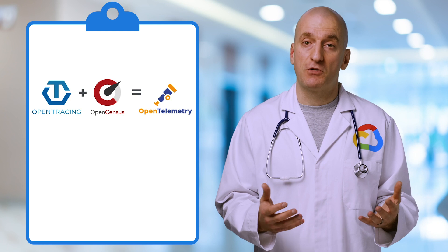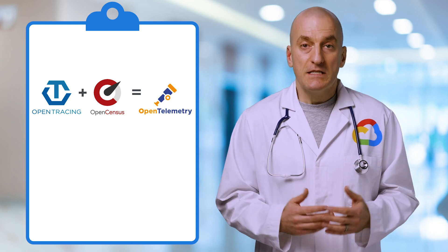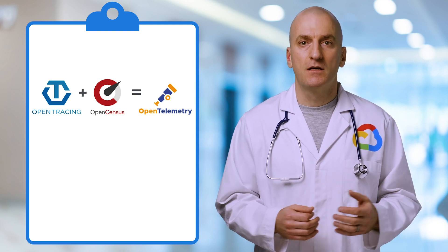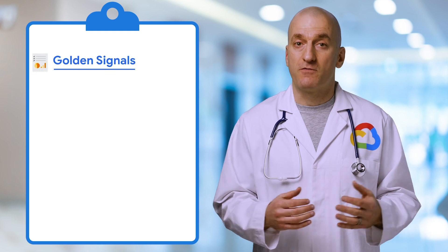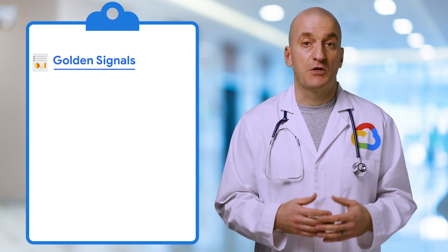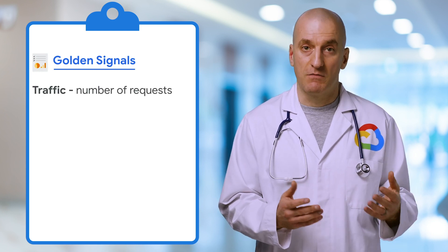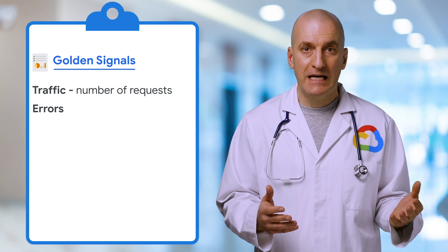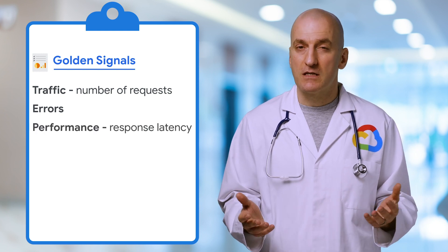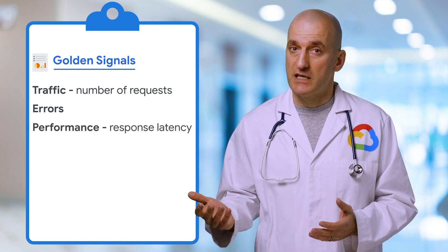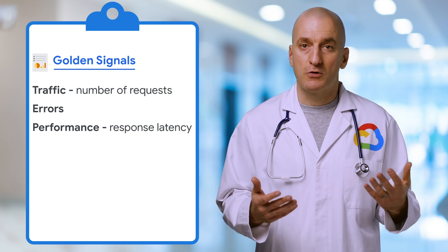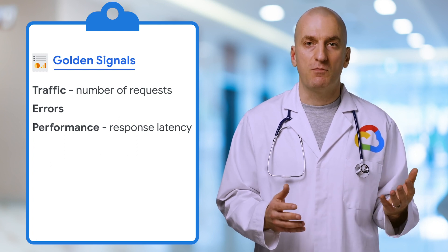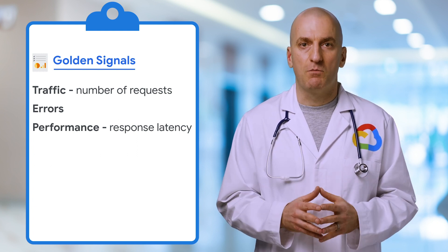Today, I'll show you how to use the metric functionality. Let's take a look at a specific example: a web server written in Node.js. We want to collect the golden signals for our service — how much traffic we're seeing expressed as request count, how many errors we're returning, and how quickly we're able to respond expressed as response latency. You can read more about golden signals in the Monitoring Distributed Systems chapter of the SRE book — we'll link to that below.